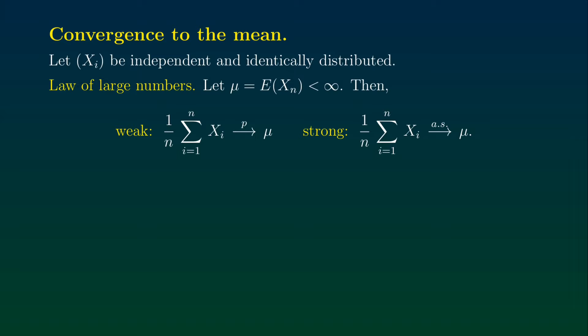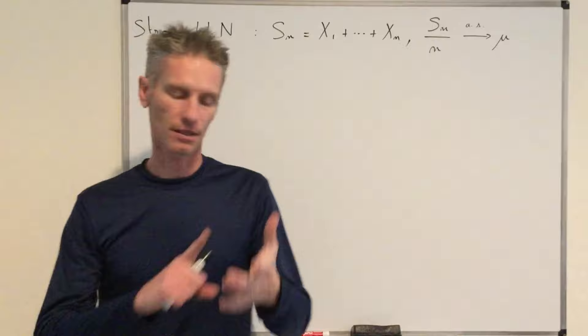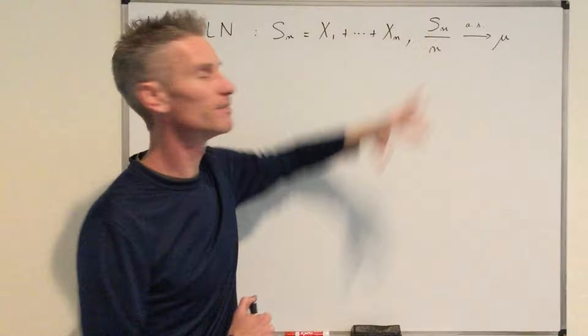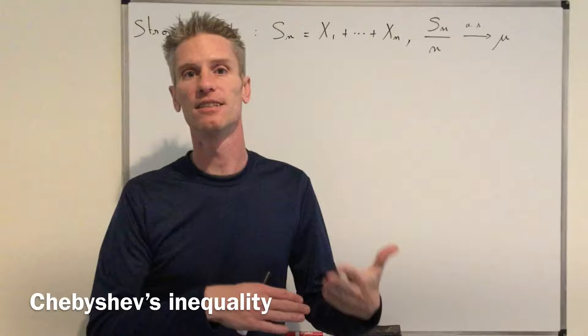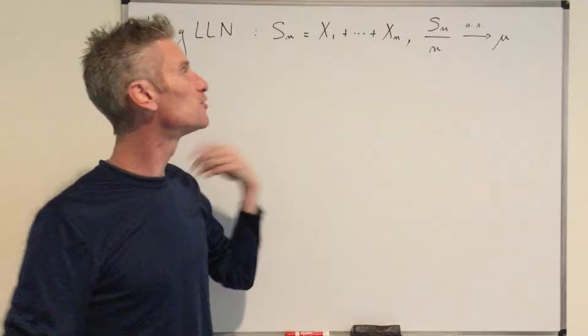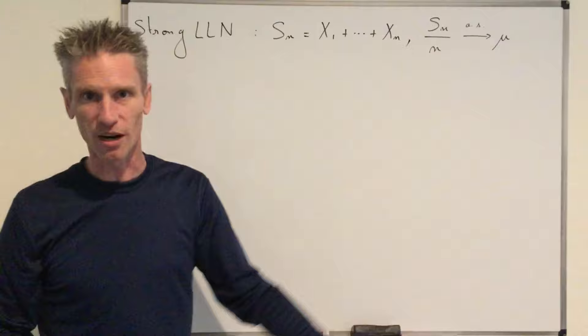Now let's prove the strong law of large numbers. The assumptions are the same, but the conclusion is stronger — we have almost sure convergence instead of convergence in probability. The spirit of the proof is: step one, prove almost sure convergence of a subsequence, specifically S_{n²} divided by n². To prove this first step, we use Chebyshev's inequality and also the first Borel-Cantelli lemma. The reason we take n squared instead of n is to decrease the variance enough so that an infinite sum of probabilities is finite, allowing us to use the first Borel-Cantelli lemma.